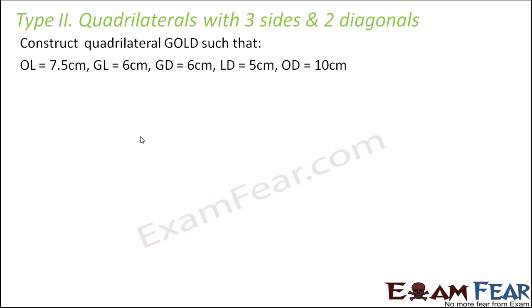So let us say that you have to construct a quadrilateral GOLD such that OL is equal to 7.5 cm, GL is equal to 6 cm, GD is equal to 6 cm, LD is equal to 5 cm and OD is equal to 10 cm. So these are the lengths that are given. So for that let us first try to do a rough sketch.